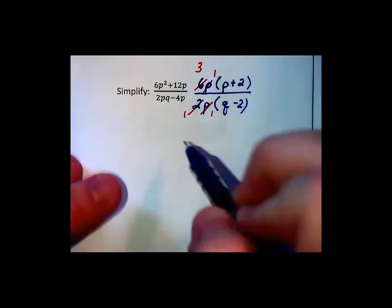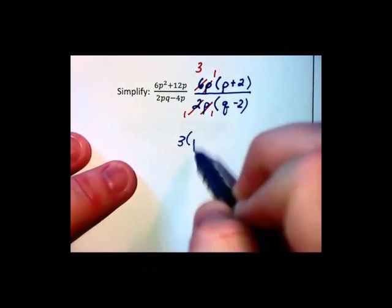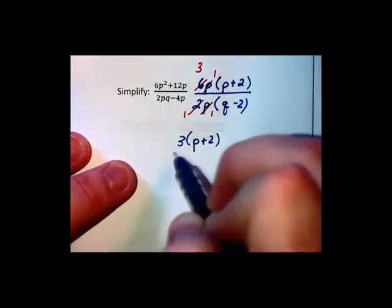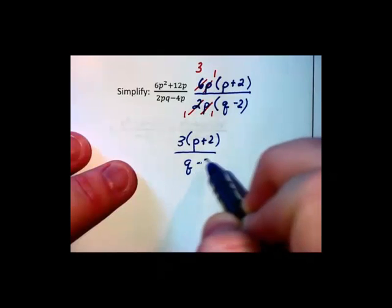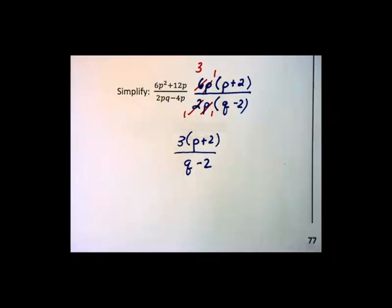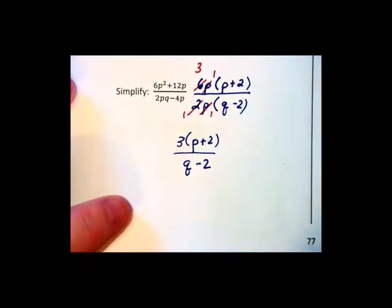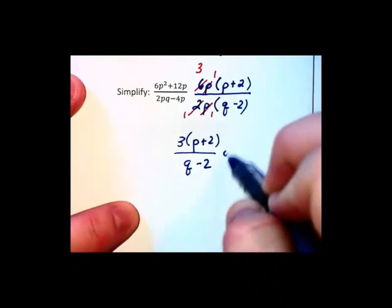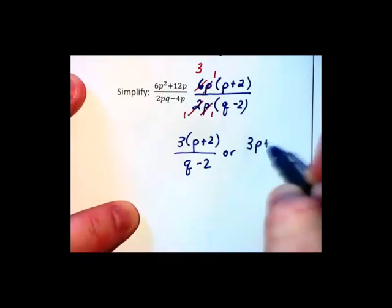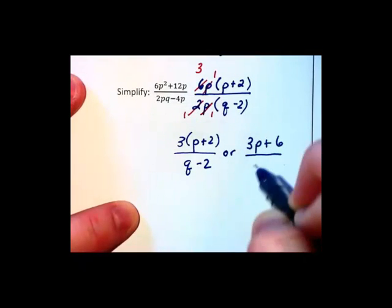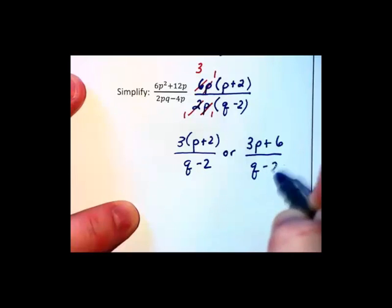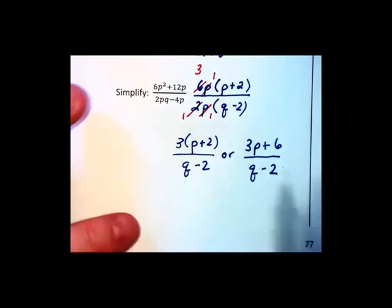The age-old question of how do you write your answer comes up. Do you leave it in this form here, factored? Or do you distribute out the numerator to write it as 3p+6? In one sense, on the right, that is more simplified because factoring is not simplifying.